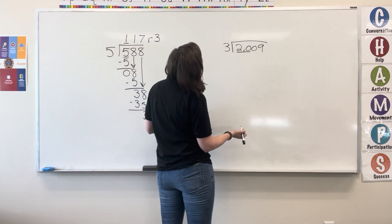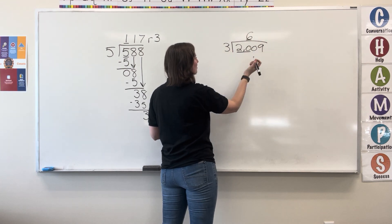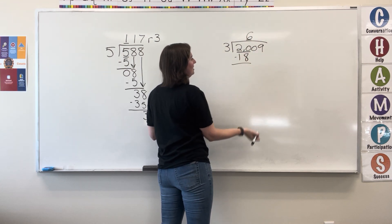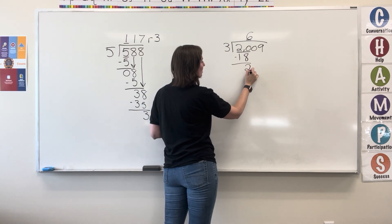3 fits into 20 six times. 6 times 3 equals 18. Write that 18. Now subtract. 20 minus 18 equals 2. Write the 2.